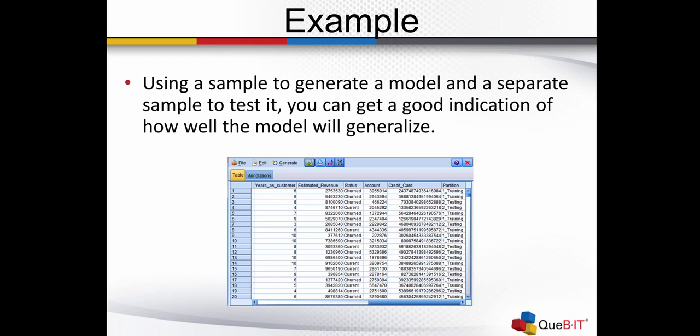As an example, you can use the partition node so that you end up creating a sample of data to generate your model, and then you have a separate sample of data so that you can test it. And that way you can see if you have a model that will generalize.